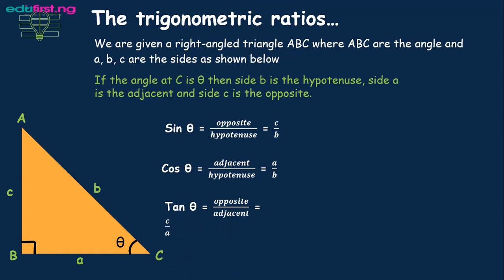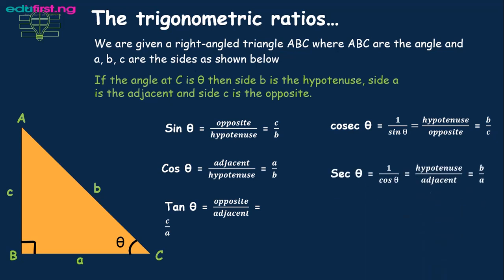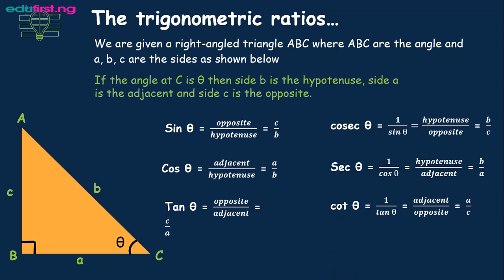We can take that a step further. Cosec theta is the inverse of sine theta, so instead of opposite over hypotenuse we have hypotenuse over opposite. Sec theta is the inverse of cos theta, and cot theta is the inverse of tan theta. These six trig ratios are important for you to memorize, because you are going to need them in solving trig questions.